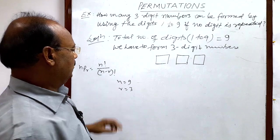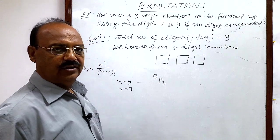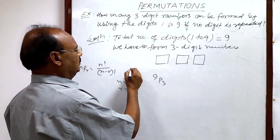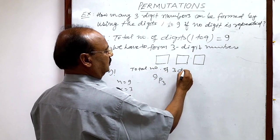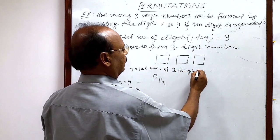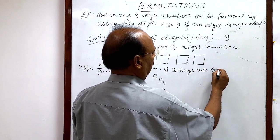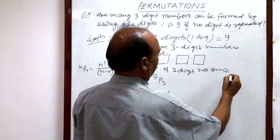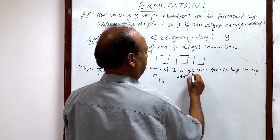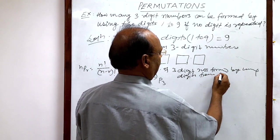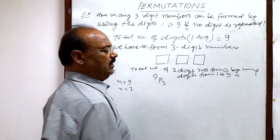So we will write that the total number of 3-digit numbers formed by using digits from 1 to 9 is 9P3.